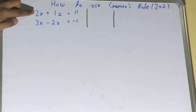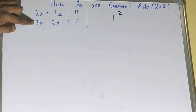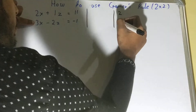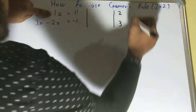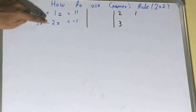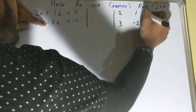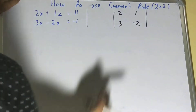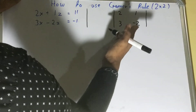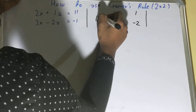The coefficient of x in the first equation is 2, and the coefficient of x in the second equation is 3. The coefficient of z in the first equation is 1, and the coefficient of z in the second equation is minus 2. Not tough at all, right? Now we'll find the determinant of this matrix.